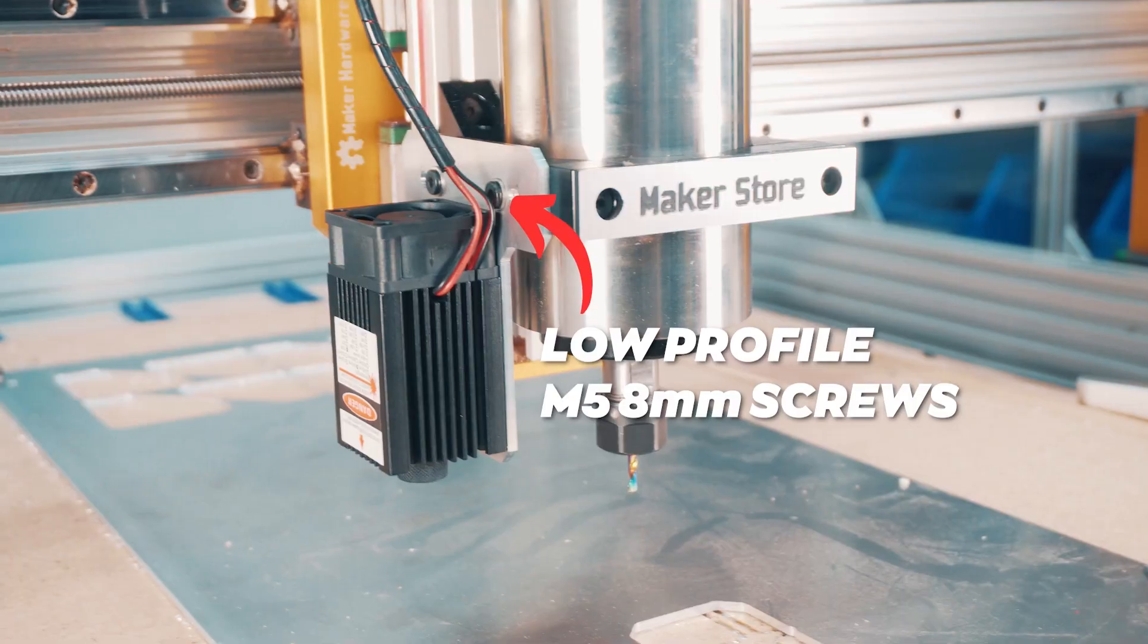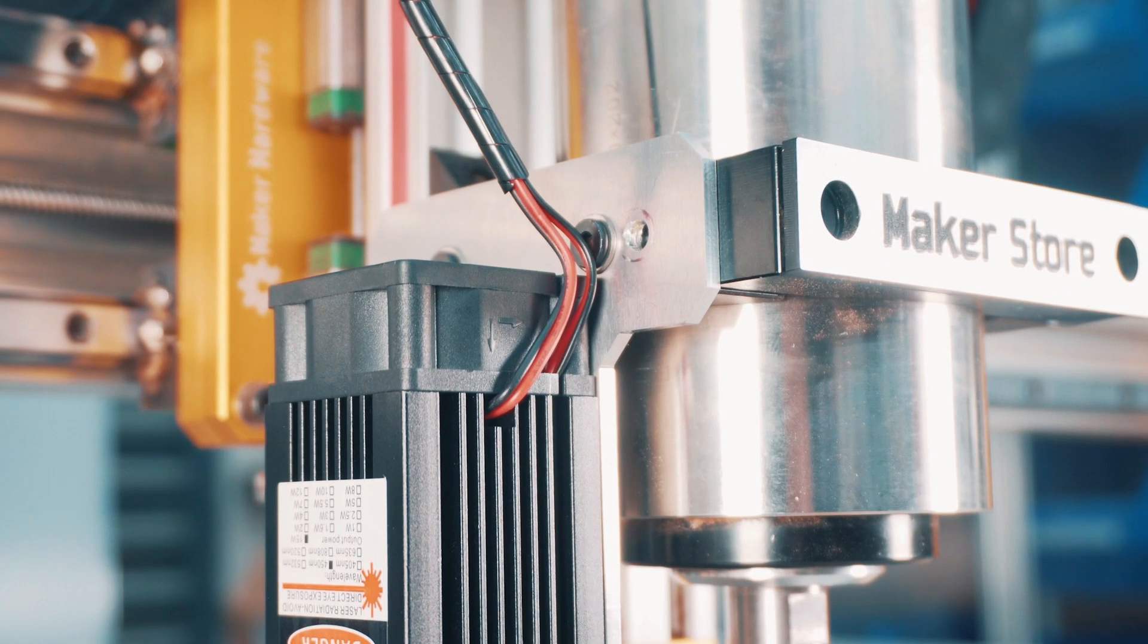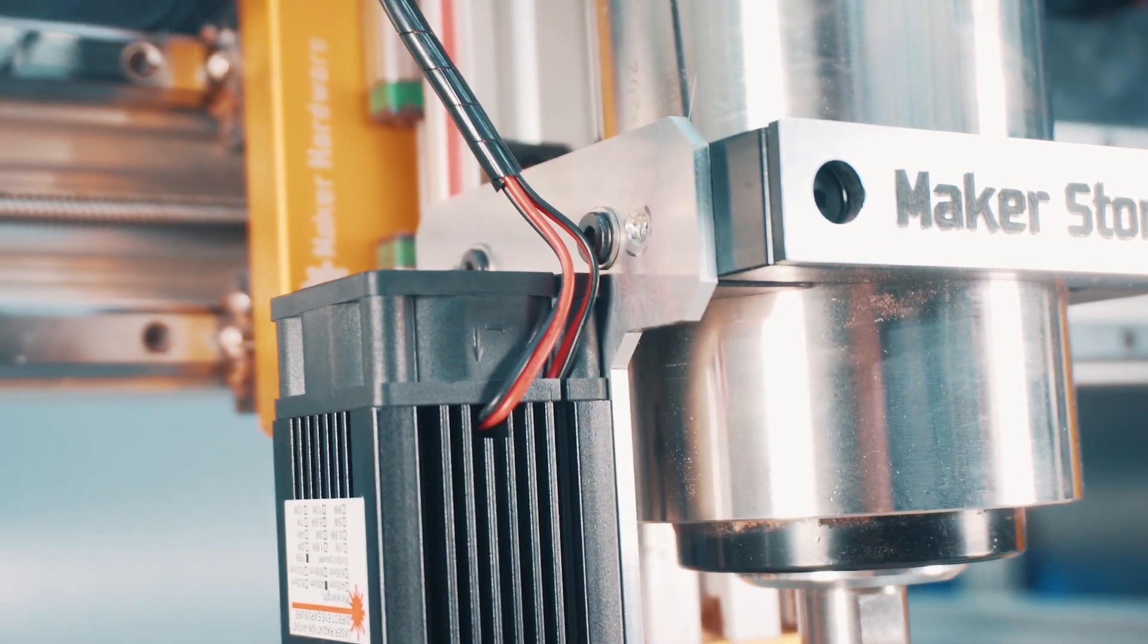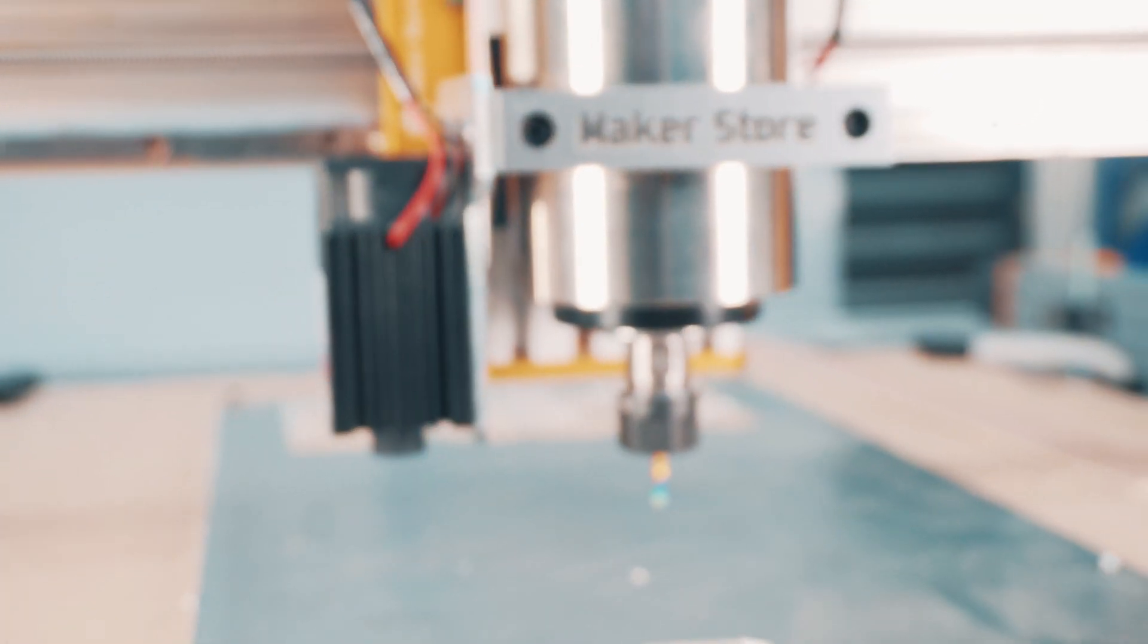As you can see, the mounting plate perfectly fits onto the spindle bracket with the laser module attached, and it's fit for purpose. So that's how essentially you can use CNC machines to solve problems or create new products in a very short period of time.